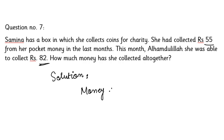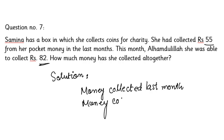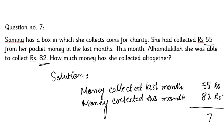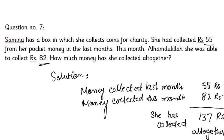Write the solution: money collected last month is 55 rupees, and money collected this month is 82 rupees. Add them up: 55 plus 82 equals 137 rupees. She has collected 137 rupees altogether.